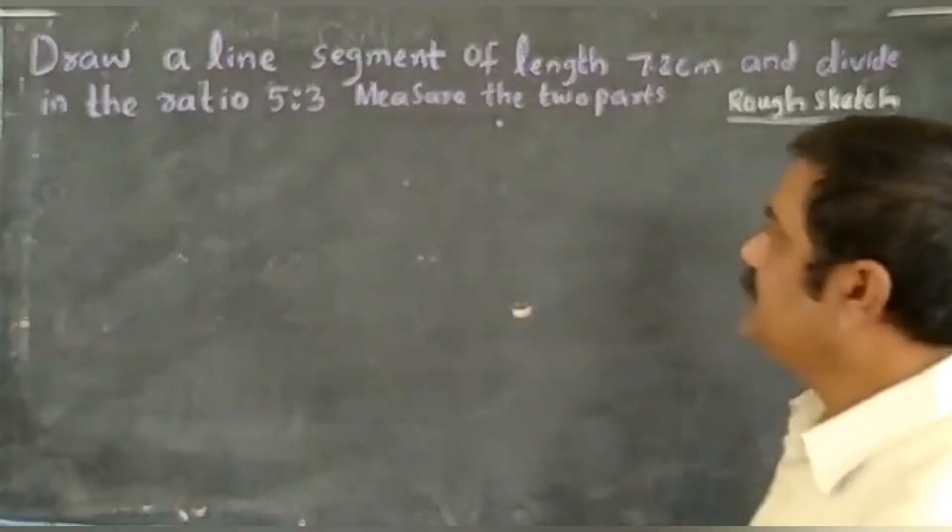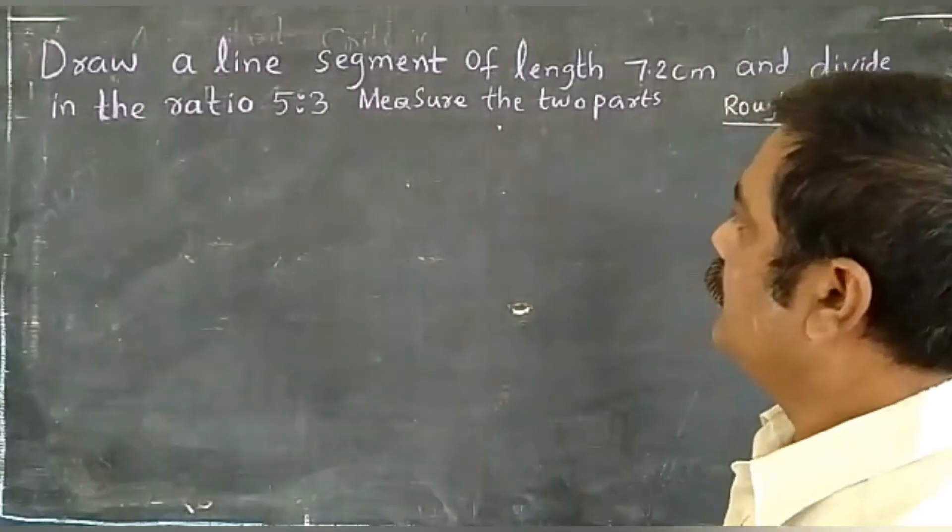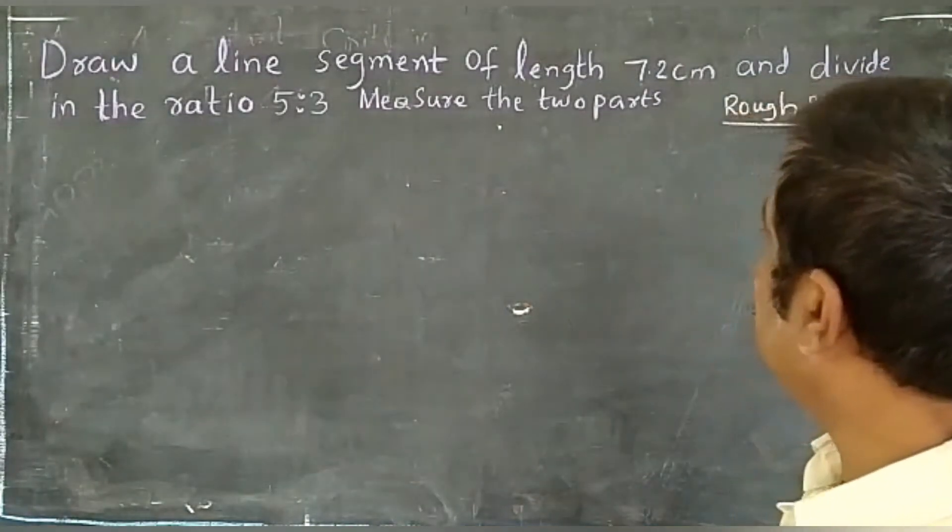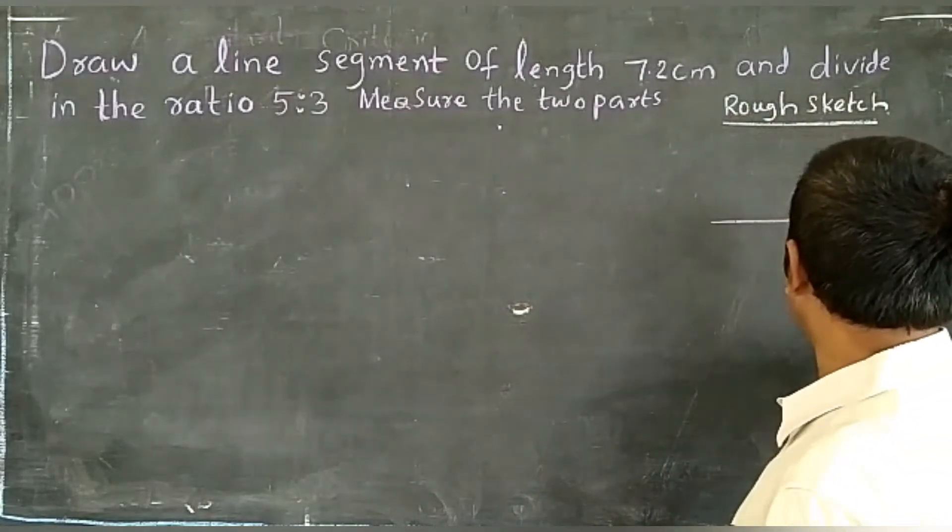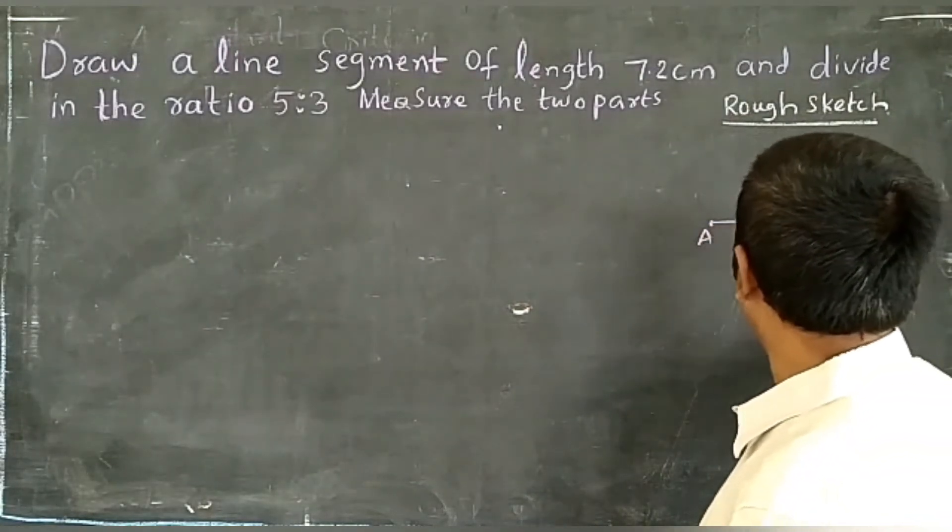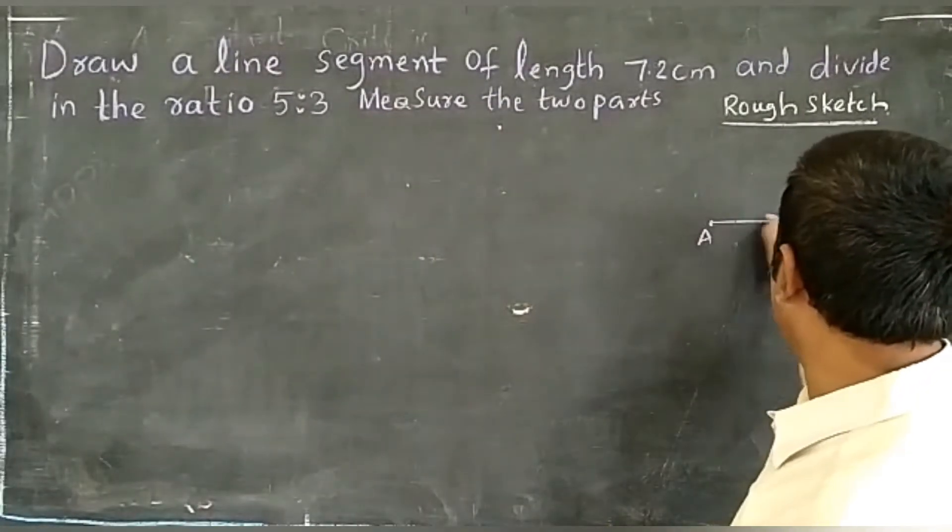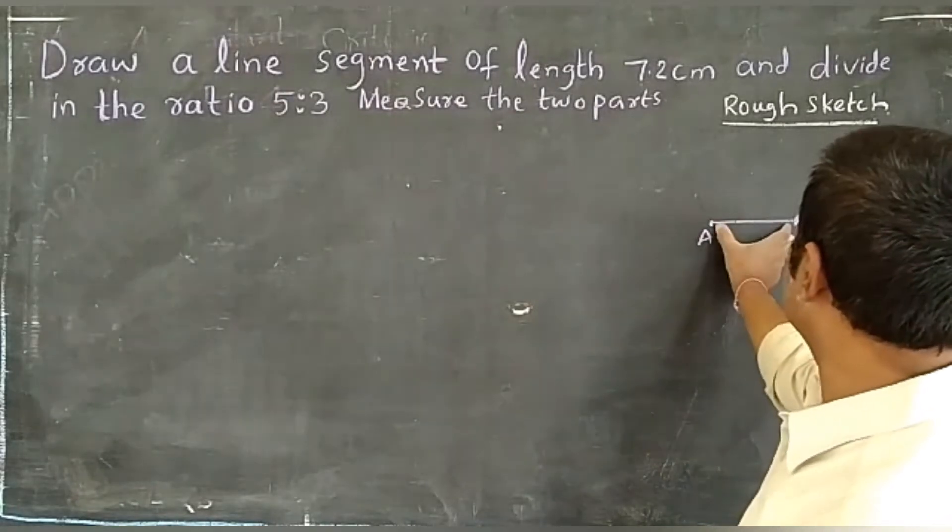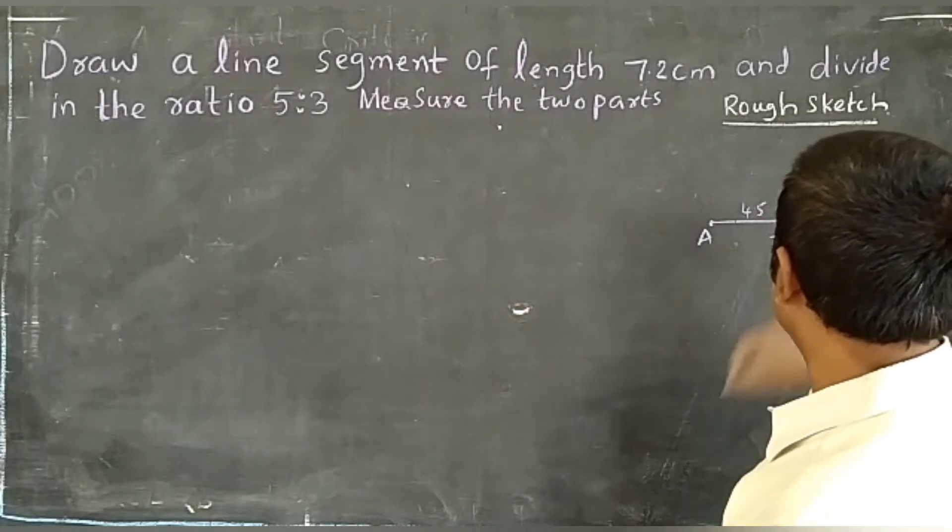This is an important construction question from section 8.1. The problem asks: draw a line segment of length 7.2 centimeters and divide it in the ratio 5 to 3. From here to here should be 5 parts, and here to here 3 parts. The 5 parts give us 4.5 centimeters, and the 3 parts give us 2.7 centimeters.